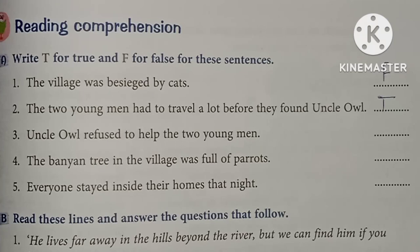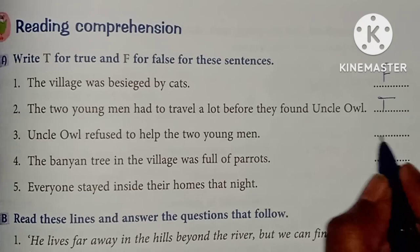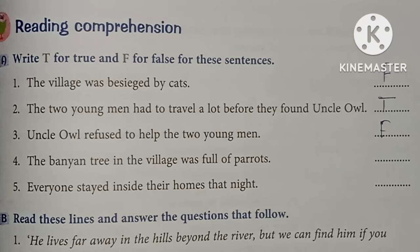Third: uncle owl refused to help the two young men. Uncle owl joh thai, woh dono young men joh gahe thai, unko refused kar diyen ki unki madat nahi karinge — toh yoh false hai, kyunki woh unki help kiye thai. So it is false.